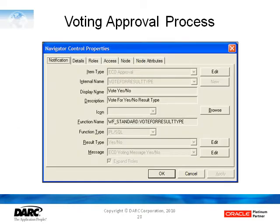When we look at the properties of the voting approval process and look at the function name, we can see that unlike the standard approval process it is not null, and we see it's got the workflow standard function vote for result type.